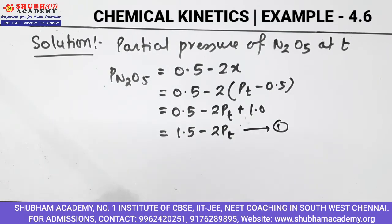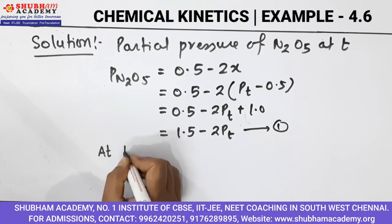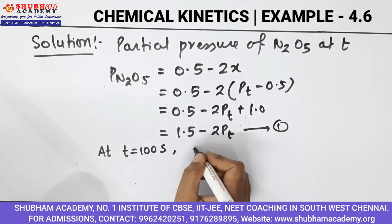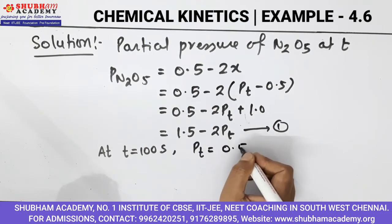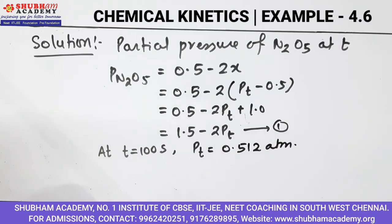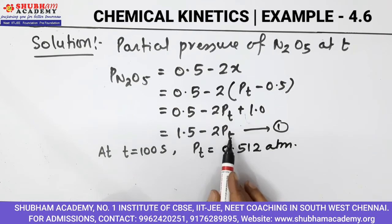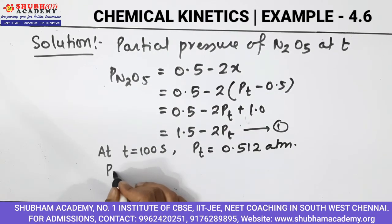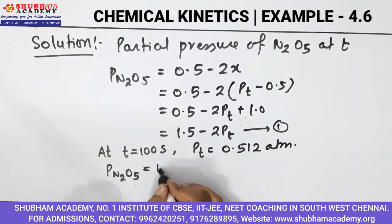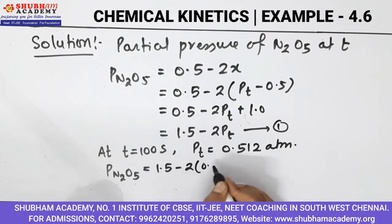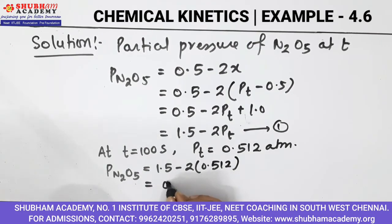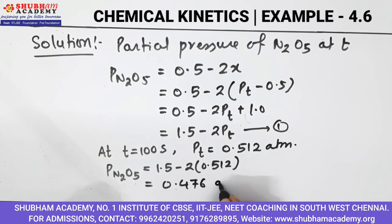At time t equals 100 seconds, the question gives us P_t equals 0.512 atmosphere. Substituting this value, the partial pressure of N₂O₅ equals 1.5 minus 2 times 0.512, which gives 0.476 atmosphere. So the partial pressure of N₂O₅ at t equals 100 seconds is 0.476 atmosphere.